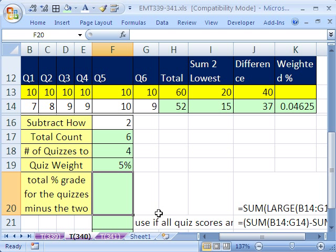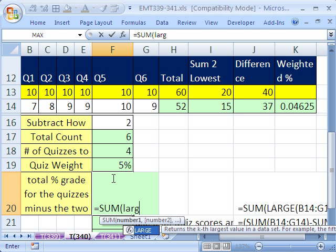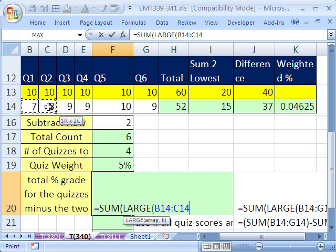Now how do we do it all in one cell? There's at least a few different ways to do this. How about this? Instead of subtracting out the two lowest, how about just taking the four biggest? So I'm going to say equals sum, and then the large. And I'll take that same array. And now the k, instead of just one and a two, we can do comma, curly bracket, 1, comma 2, comma 3, 4, and curly bracket.